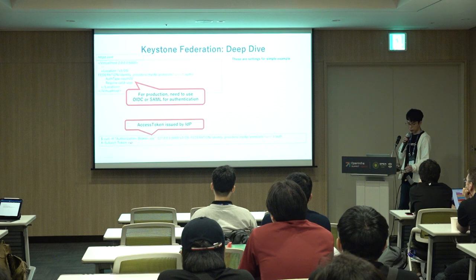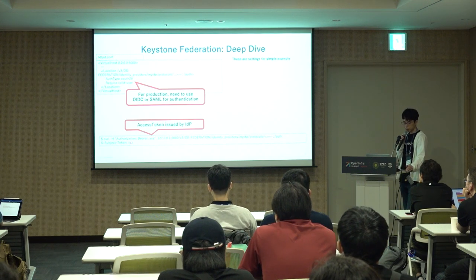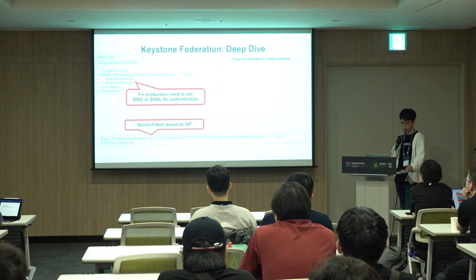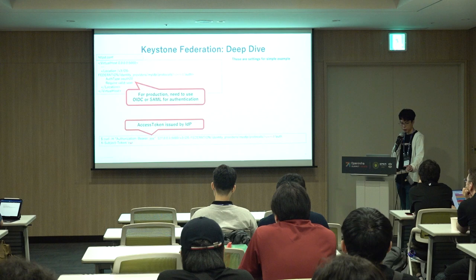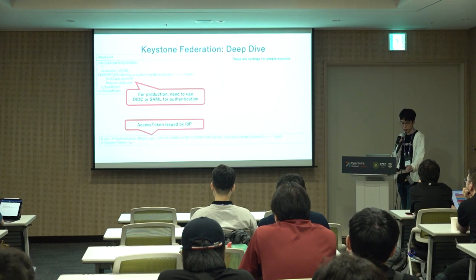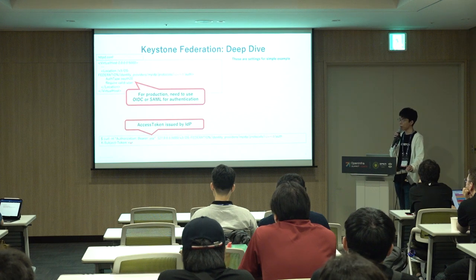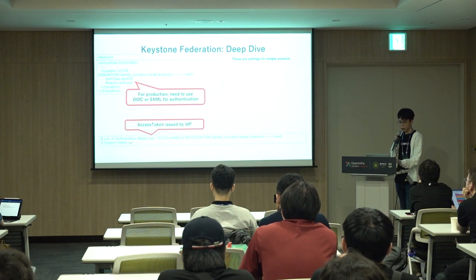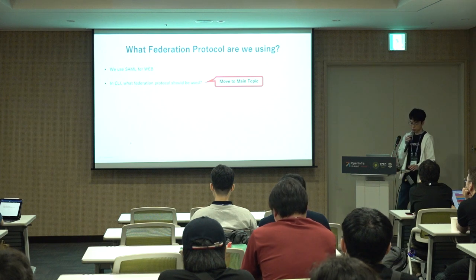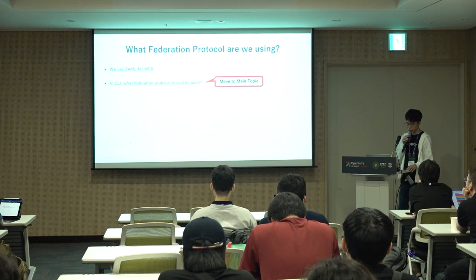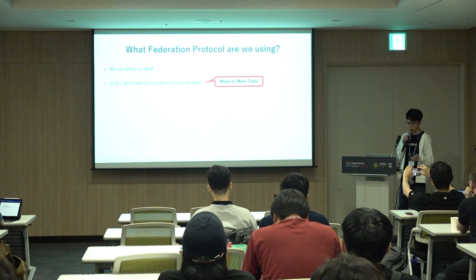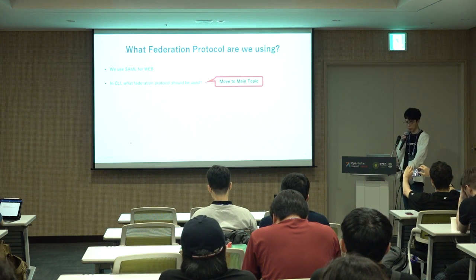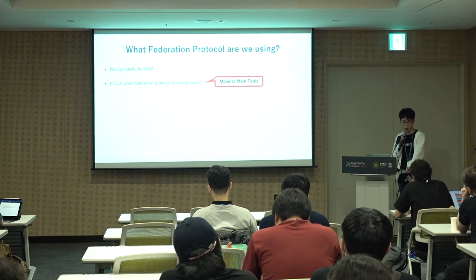The previous example used the HTTP header for authentication information, but for production we need to use OIDC or SAML. Regardless of the protocol used, the basic behavior of Keystone federation is the same as the previous example. We can freely use the various federation protocols provided by the identity provider. Traditionally, we have used the SAML protocol for web applications. However, for the CLI, a different federation protocol should be used. Now I'm going to hand over the presentation to Hashino-san.